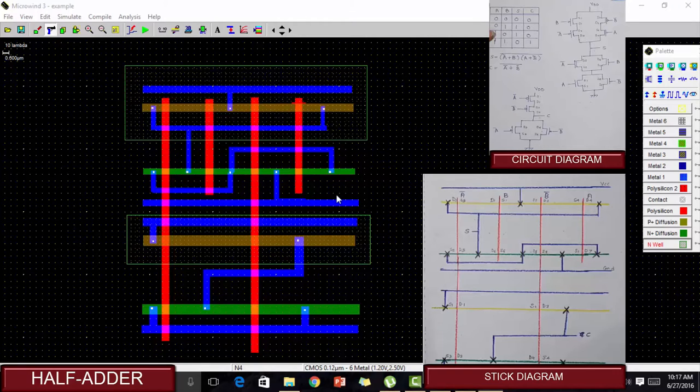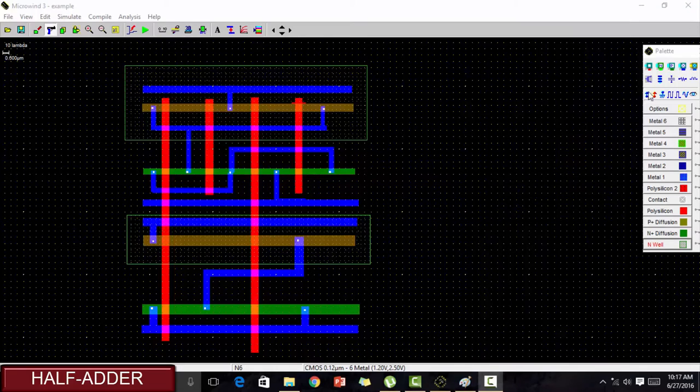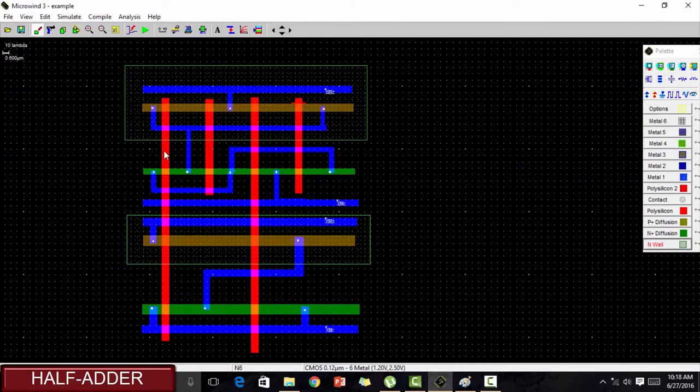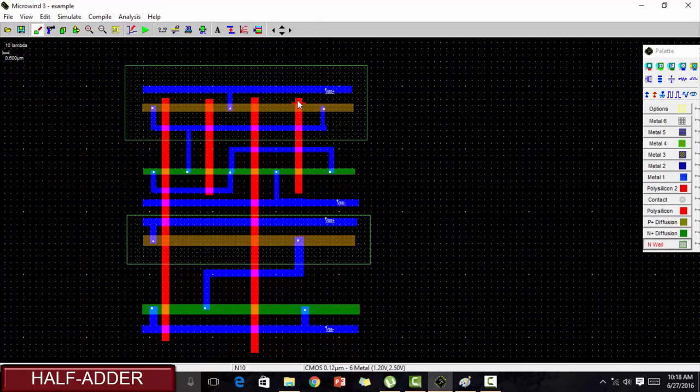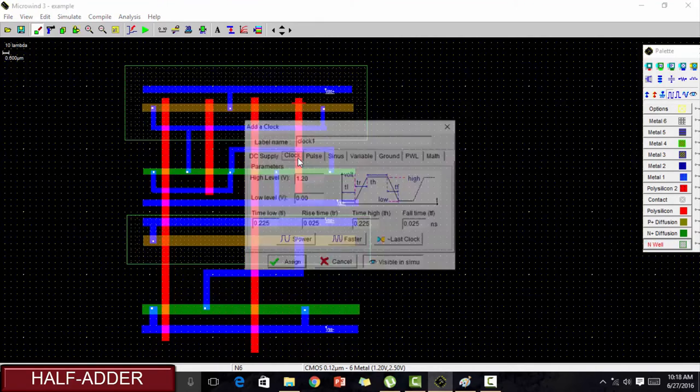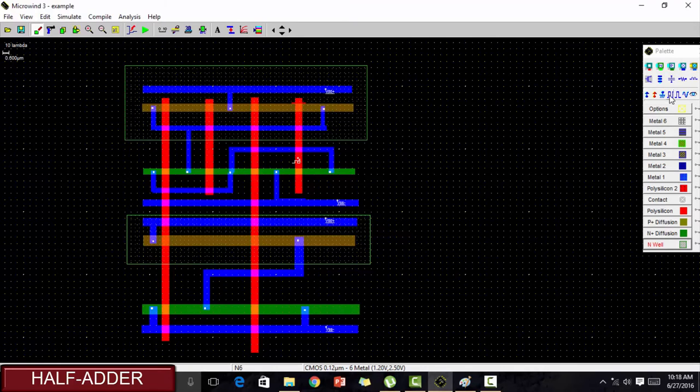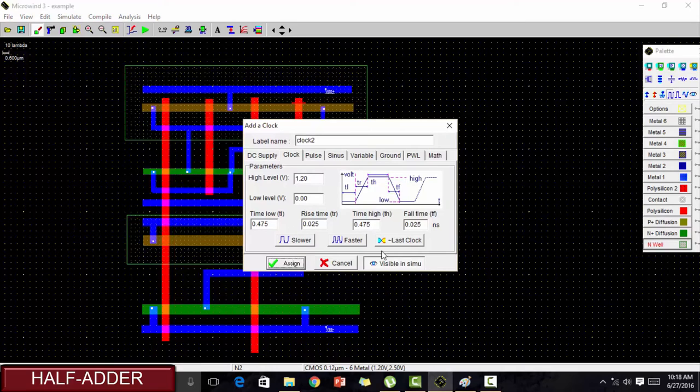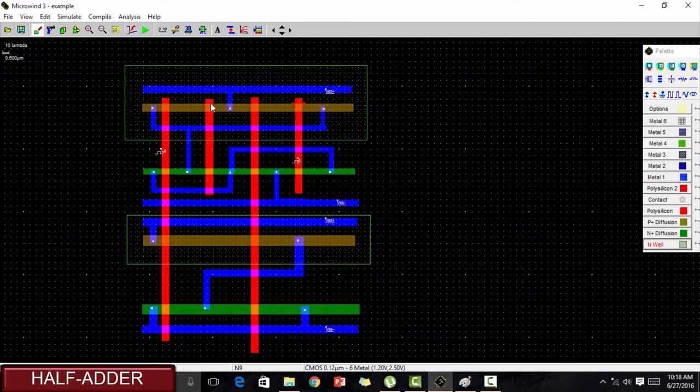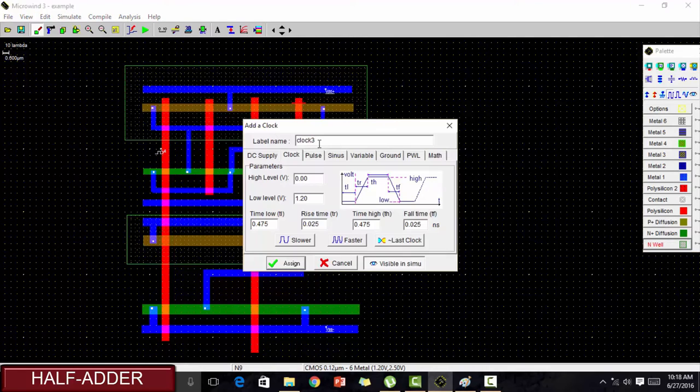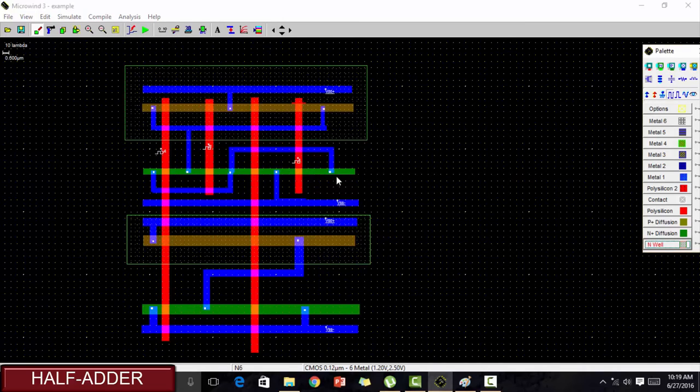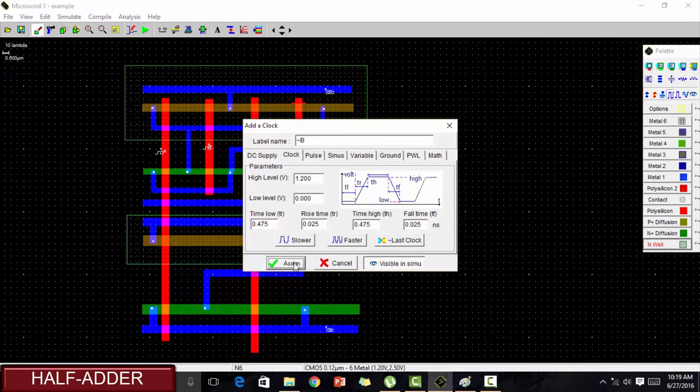Two metals for VCC and ground are required for sum. Two metals VCC and ground are similarly required for carry operation. Let us give VCC and ground. We know that this is A bar and this is A. So let us first give the input clock to A. Let's name it as A. This polysilicon is with input B bar.